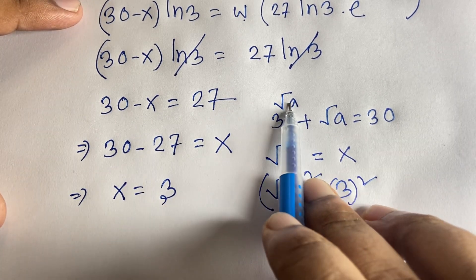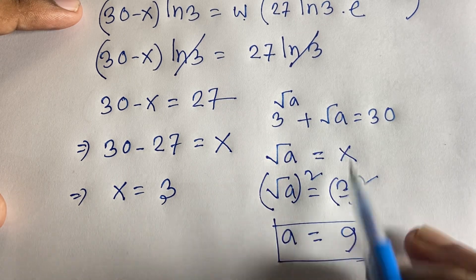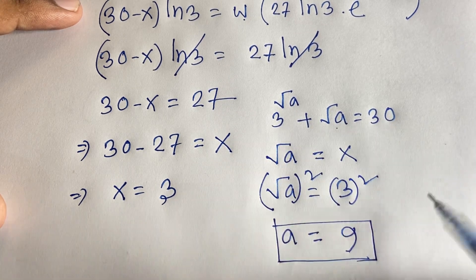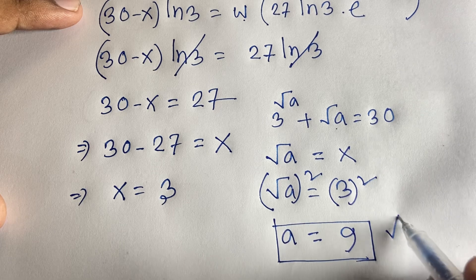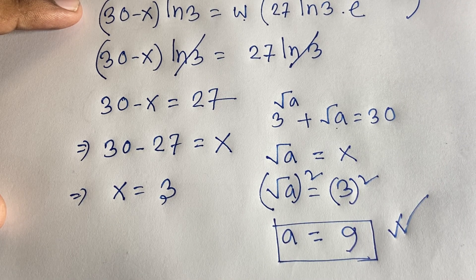Let's verify: square root of 9 equals 3, and 3 to the power 3 equals 27. Then 27 plus 3 equals 30. So a equals 9 is correct. Thank you all — if you enjoyed this video please subscribe to my channel for more interesting videos. Goodbye, take care!